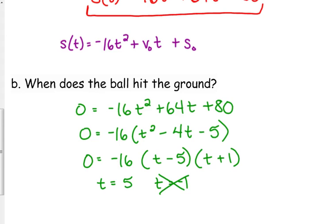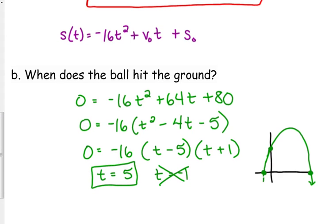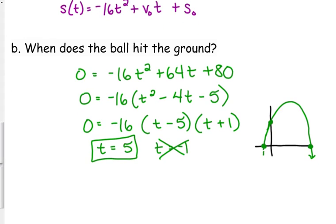And it makes sense that one of our times is negative because if you think about this scenario, it said that it started at an initial height of 80. So we're going to go up from there and then we're going to hit the ground over here. So it makes sense that the other part of our parabola intersects on the negative side. So after 5 seconds is when the ball hits the ground.